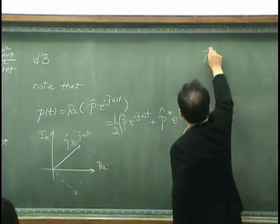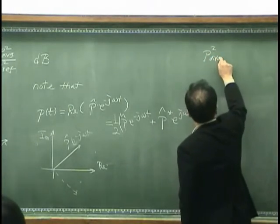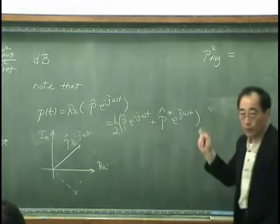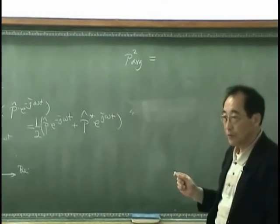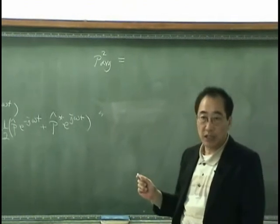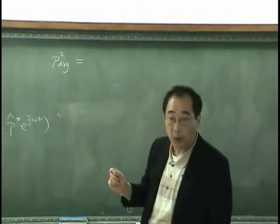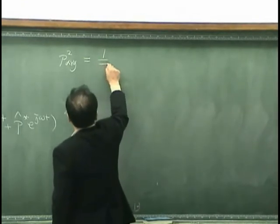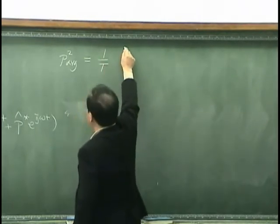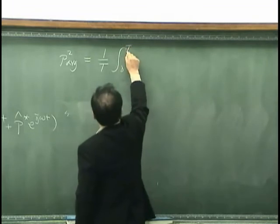So, suppose we have to get mean square average of certain pressure signal that has many frequency components. And what I have to do is, I have to take average, 0 to t.